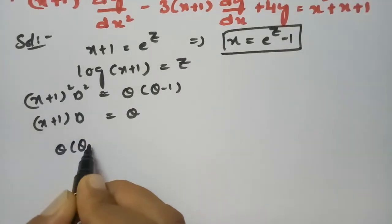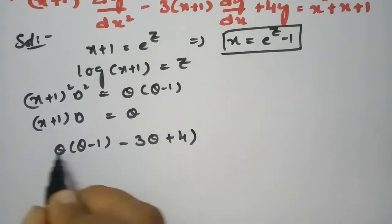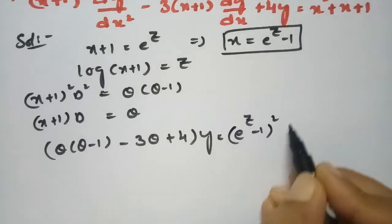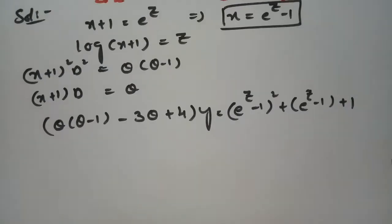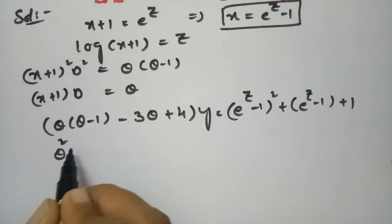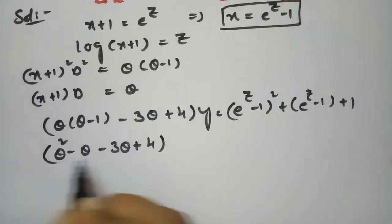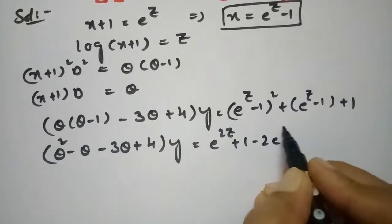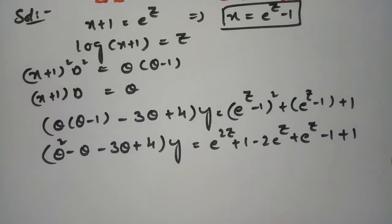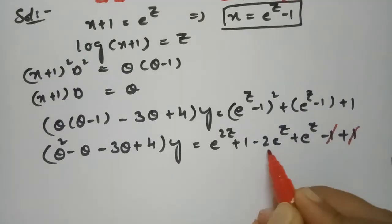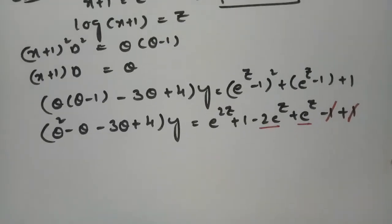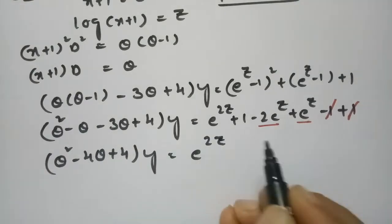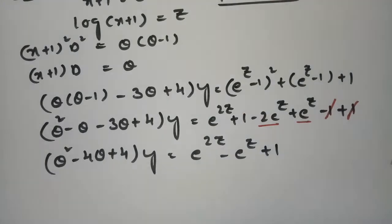The equation becomes [θ(θ − 1) − 3θ + 4] y equals the right-hand side. Since x = e^z − 1, we have x² + x + 1 = (e^z − 1)² + (e^z − 1) + 1. Expanding: (e^z − 1)² = e^(2z) − 2e^z + 1, so adding (e^z − 1) + 1, the −1 and +1 cancel, giving e^(2z) − e^z + 1. The left side simplifies to (θ² − 4θ + 4) y = e^(2z) − e^z + 1.